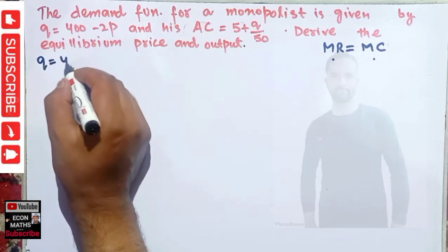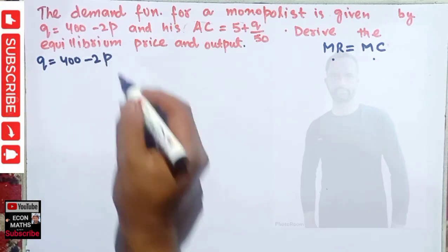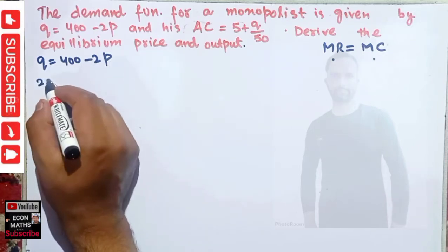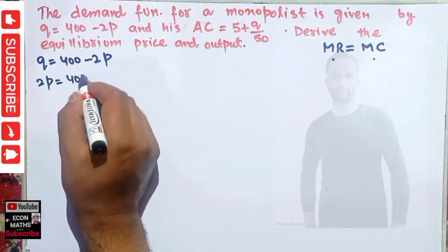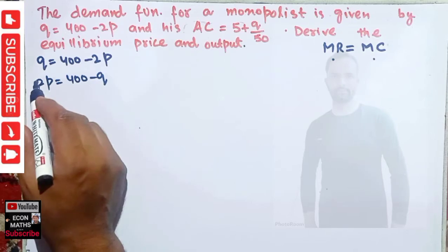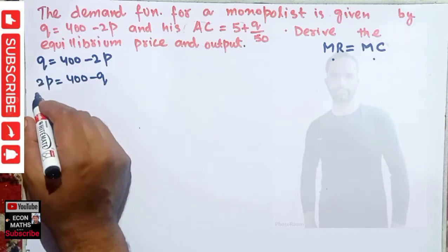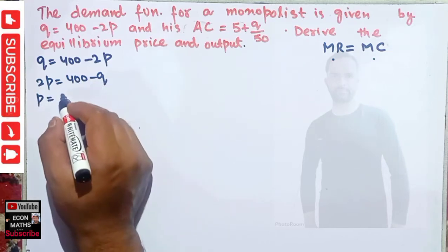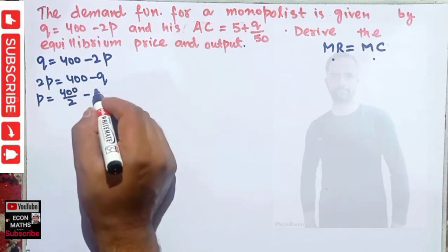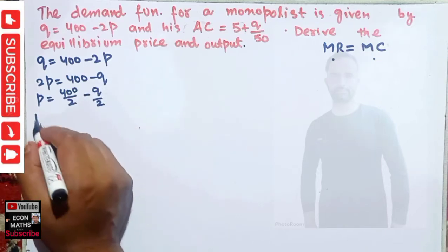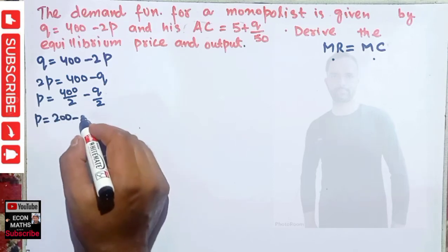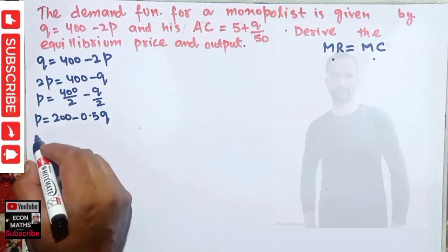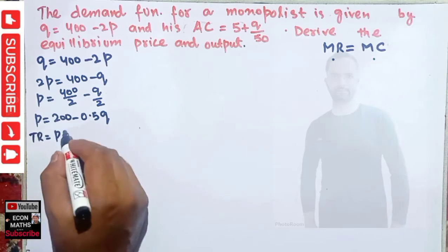The demand function is Q = 400 − 2P. We solve it for P: 2P = 400 − Q, so P = 400/2 − Q/2, which gives P = 200 − 0.5Q. This is our inverse demand function.